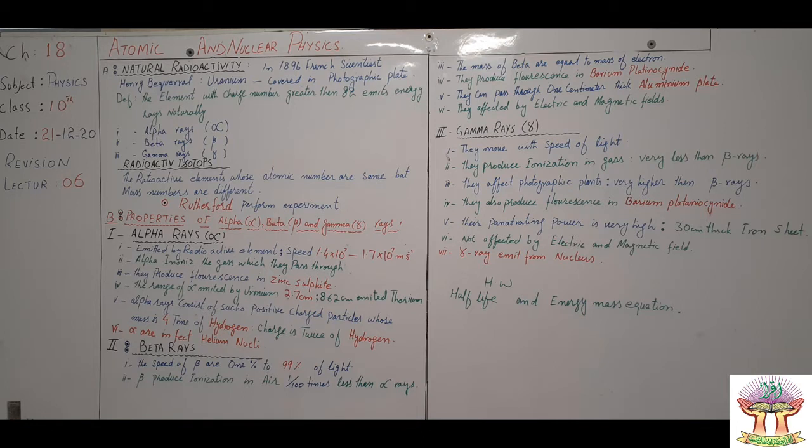The range: alpha rays from uranium can travel 2.7 meters and thorium alpha rays can travel 8.62 centimeters. Alpha rays are positively charged particles, 4 times the size of hydrogen or double hydrogen's size. Alpha rays are in fact nuclei of helium.